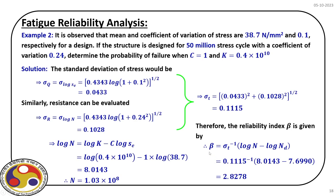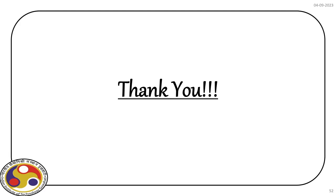I leave computing the corresponding probability of failure phi(-beta) as an exercise. One thing to note: we designed for 50 million cycles while the SN curve shows the material can withstand 103 million cycles, so there is a margin reflected in beta = 2.8278. With that, our discussion on applications ends. Thank you very much.